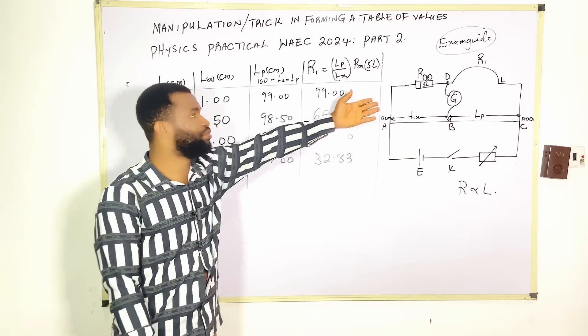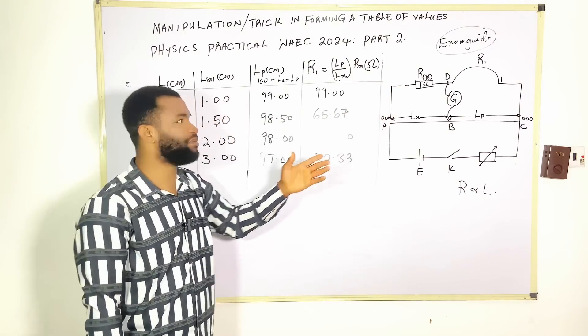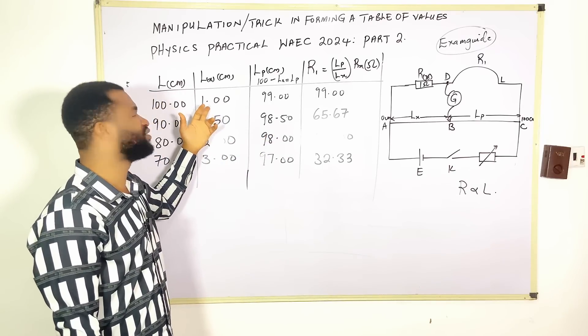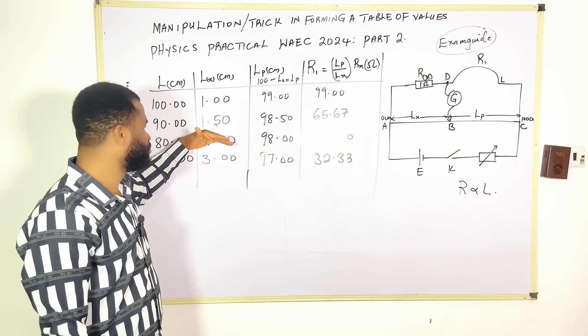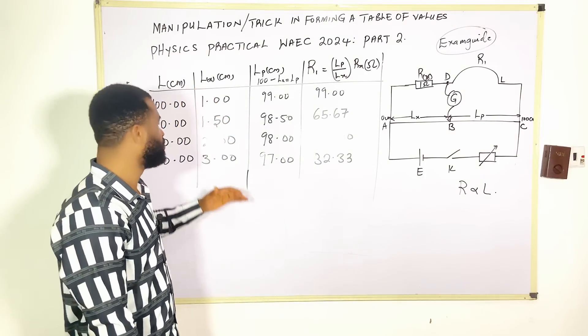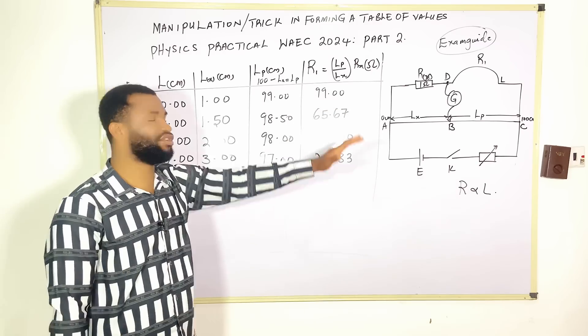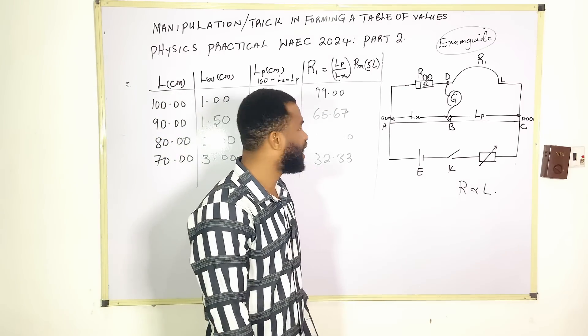The kind of wire you put there, maybe your balance point may be, let's say, 20. That is what is going to determine whatever you're going to have here. Once you have this, you can also manipulate the rest of the table and plot your graph.